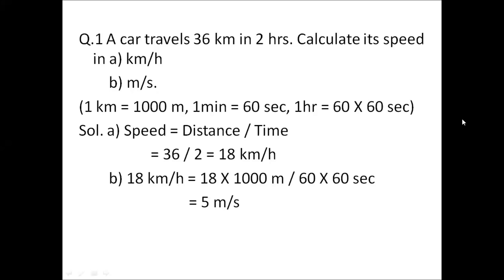Now we have a numerical based on speed: a car travels 36 kilometers in 2 hours — calculate its speed in kilometers per hour and in meters per second. In part A, applying the simple formula of speed, the speed is 18 kilometers per hour. In part B, converting units — 1 kilometer = 1000 meters, 1 hour = 3600 seconds — we calculate speed in meters per second as shown in the slide.